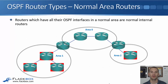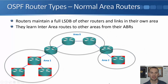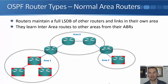The next router type is the normal area router — a router where all interfaces are in one normal area. For example, three routers highlighted in red are area 1 routers with all interfaces in area 1, and one router is an area 2 router. These routers maintain the full LSDB for their own area. Area 1 routers have the full LSDB for area 1 and summary routes for area 0 and area 2 learned from the ABR. The area 2 router has the full LSDB for area 2 and summary routes for area 1 and area 0.